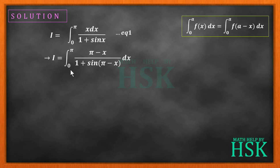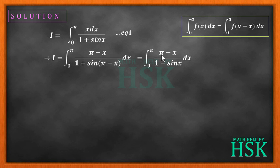Applying this property, I get I = ∫₀^π (π−x)/(1+sin(π−x)) dx. Now, I know that sin(π−x) = sin x, so this becomes ∫₀^π (π−x)/(1+sin x) dx.